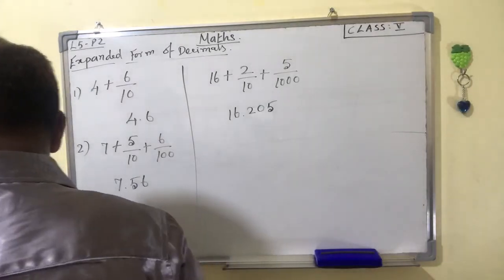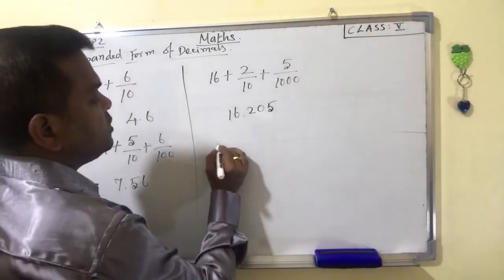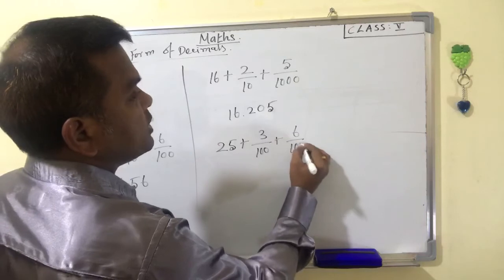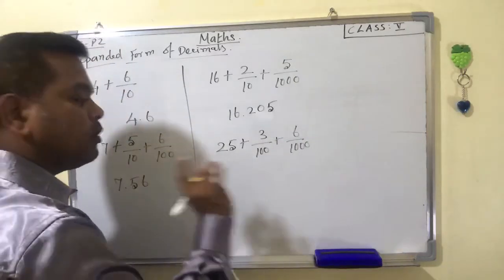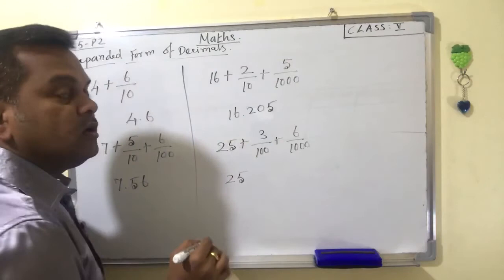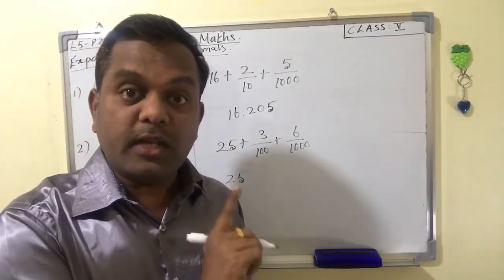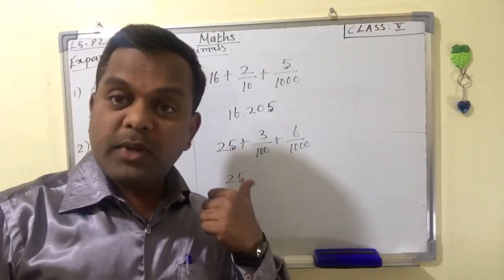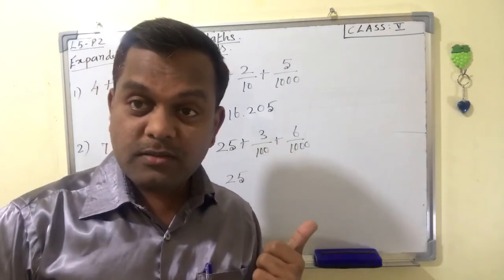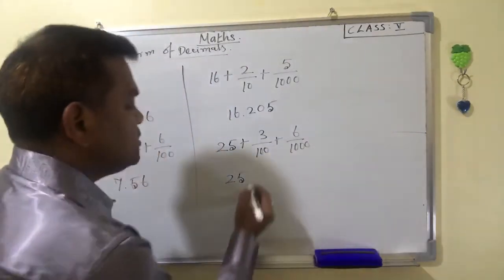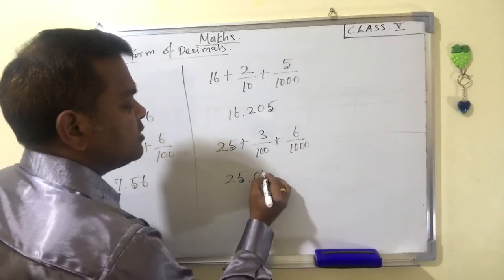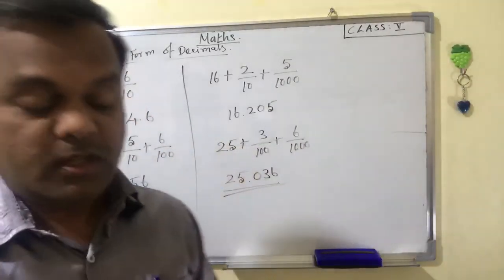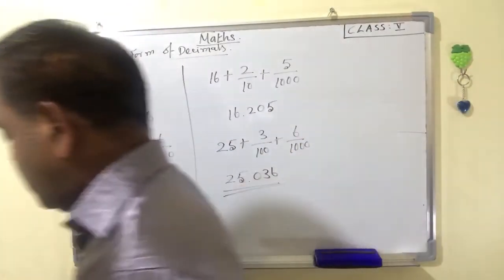Next question: 25 plus 3/100 plus 6/1000. The whole number is 25. The first place after the decimal should be tenths, but there is no tenths term, so add a zero. Then 3/100 goes in the hundredths place — write 3. Then 6/1000 gives 6. The answer is 25.036. Remember: if a place is missing, you must add a zero.